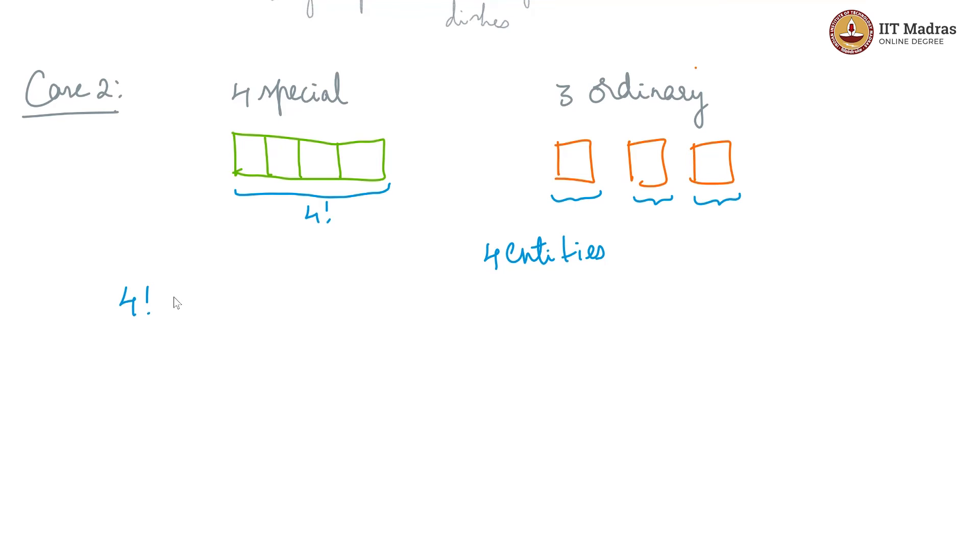Every permutation of our 4 entities also should account for the 4 factorial permutations within the sequence. And now, we also have to account for how many ways we can pick 4 special items from 5. We have 5C4 and how many ways we are picking 3 ordinary items from 5 which will give us 5C3. This is going to give us 24 into 24 into 5 into 10. That is 28800 ways for case 2 which is 4 special and 3 ordinary.